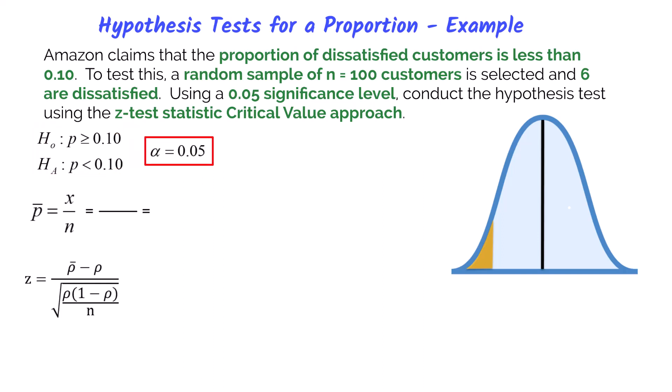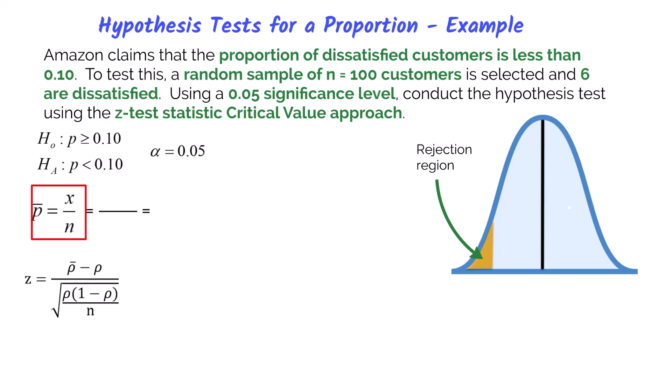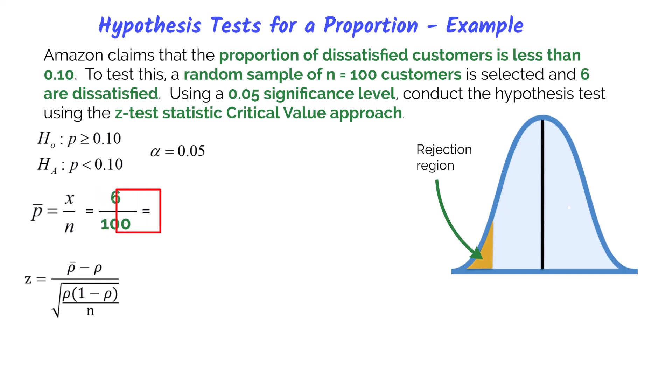Next, we identify the alpha level of 0.05 — that is the cutoff point for the rejection region on the left side of the curve. We also need to find the sample proportion p-bar, using the formula from chapter seven: take the number of items with the characteristic of interest and divide by the sample size. We take the six dissatisfied customers and divide by the 100 customers in the sample, giving us a sample proportion of 0.06.